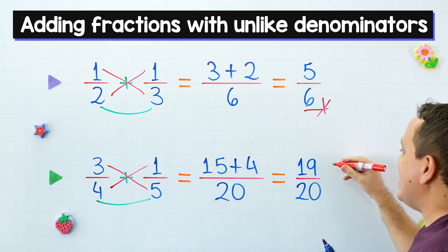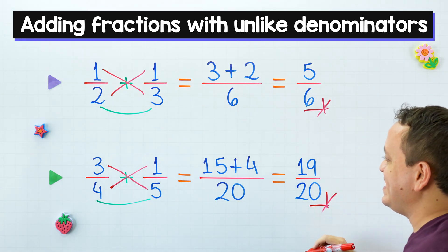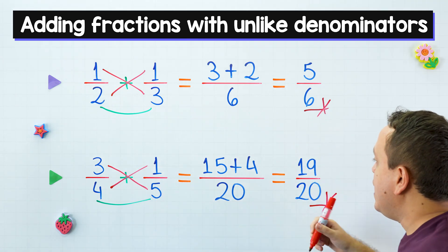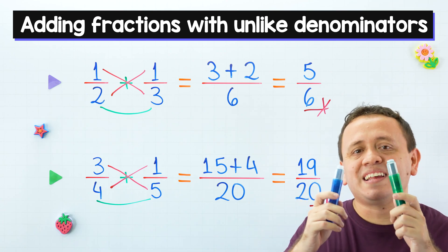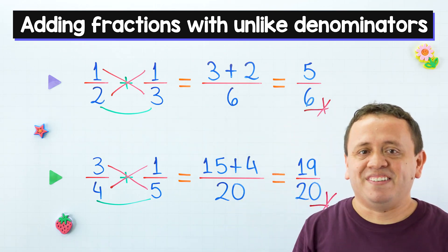Our final answer is 19 twentieths. Yes, three fourths plus one fifth equals 19 twentieths. That's all for today. You will find more examples in the video information. See you next time.